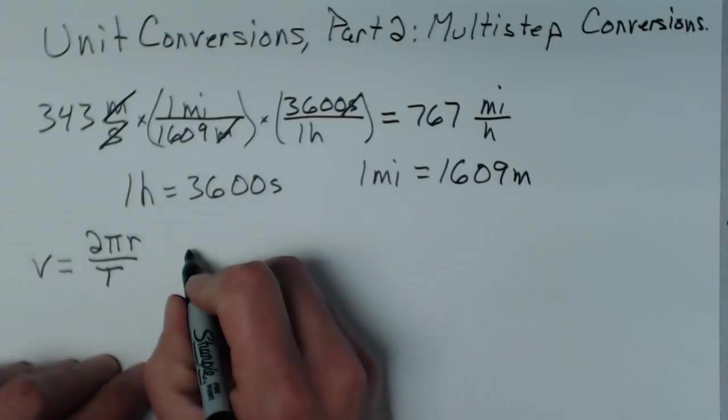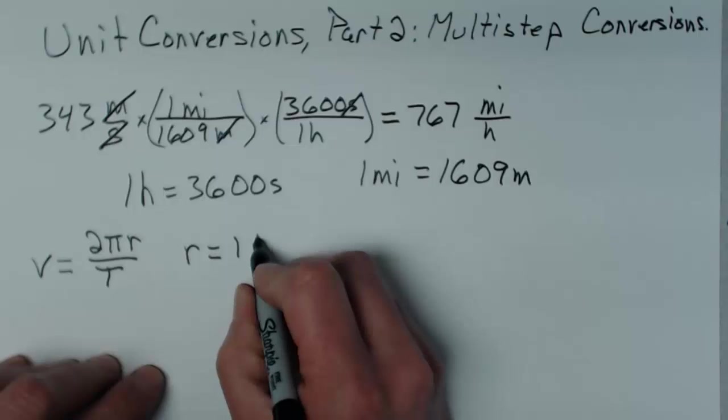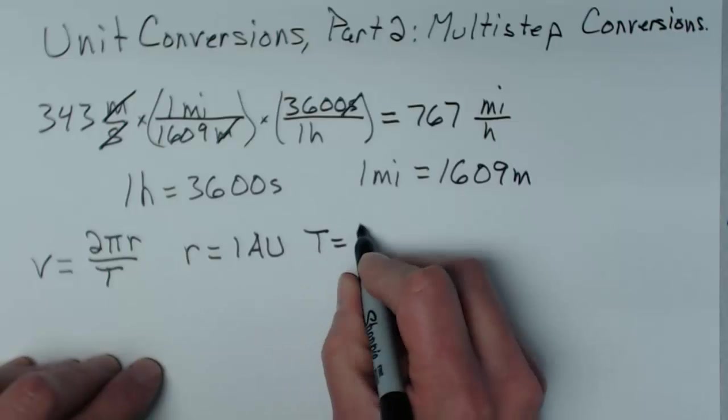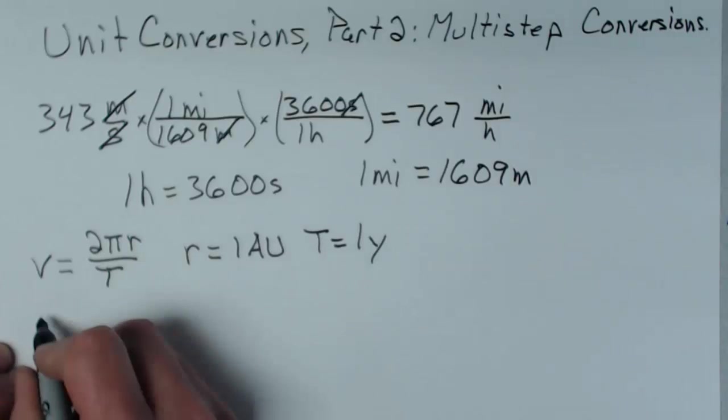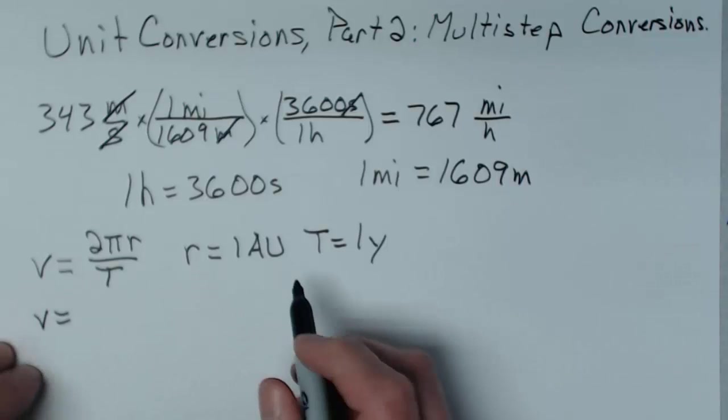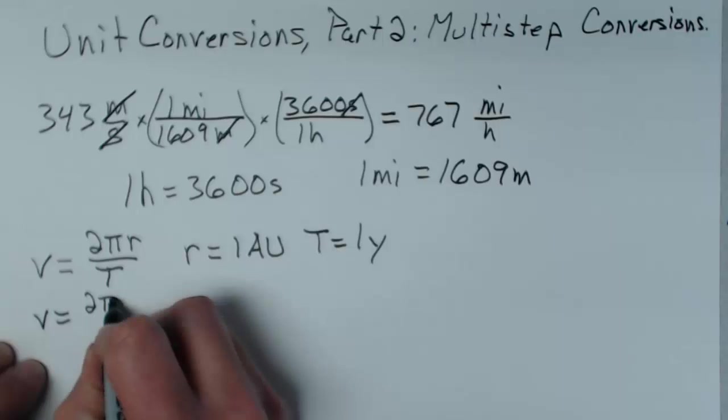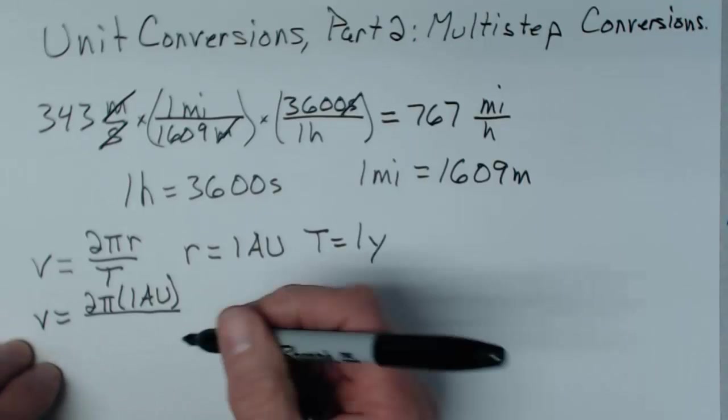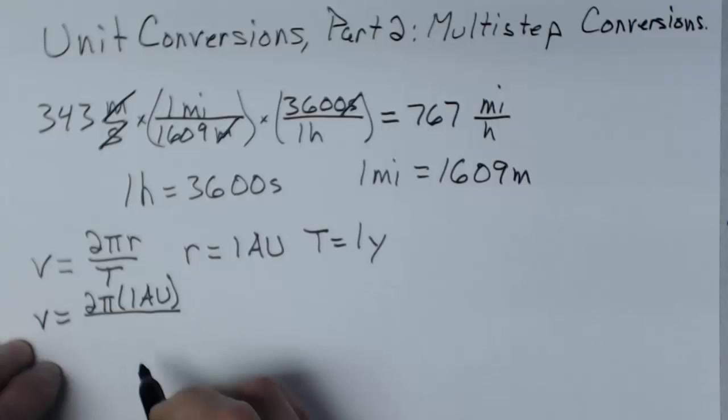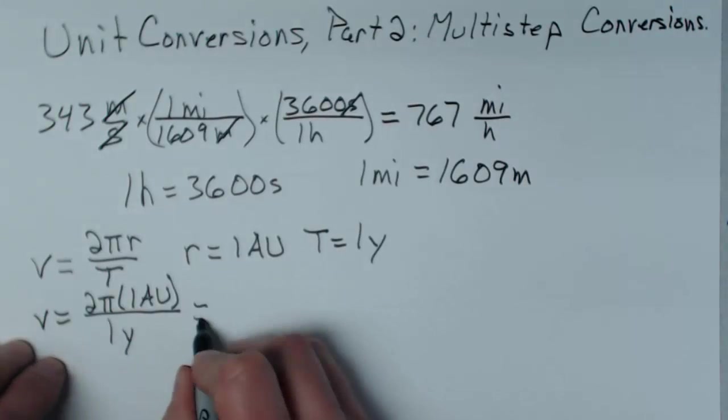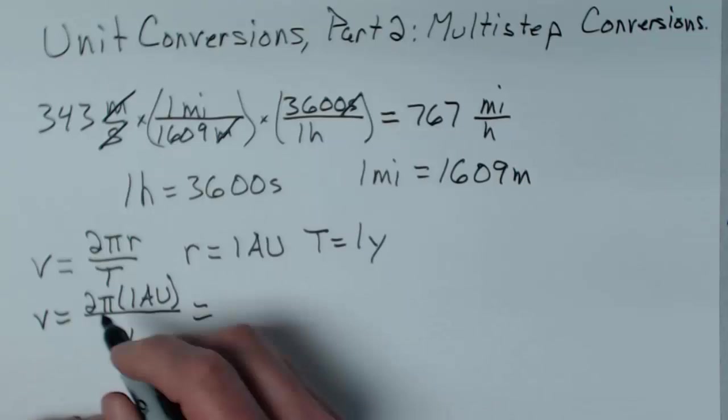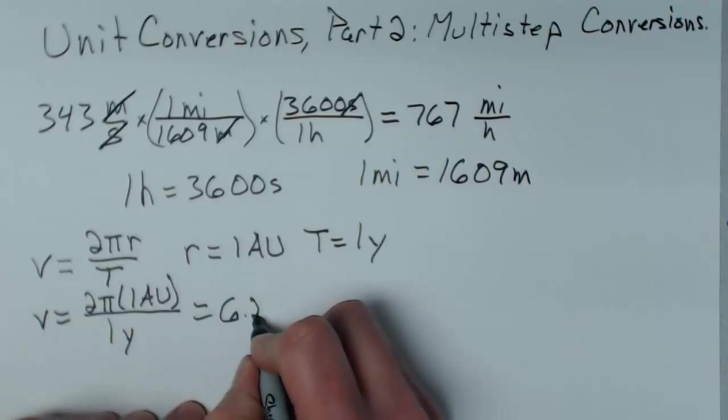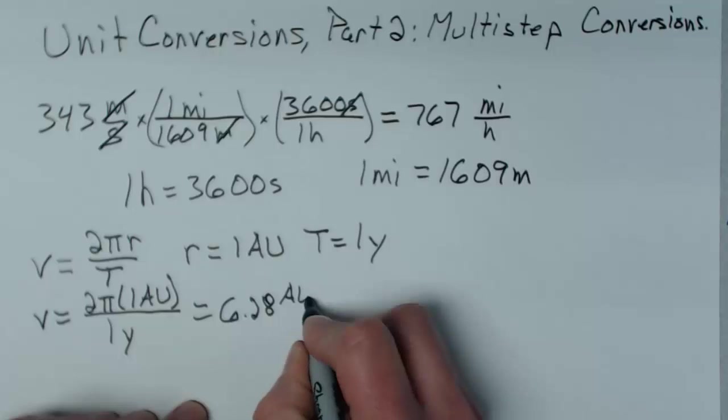Okay well, we know that the radius of the orbit happens to be one astronomical unit, and the time that it takes the earth to orbit happens to be one year. And so if we wanted it in particular units, I'd have 2 times pi times 1 AU. Maybe you've never even heard of that unit before. It happens to be the approximate radius of the earth's orbit divided by one year. And if I multiplied that out, 2 times pi is about 6.28 times 1, I'd get 6.28 AU per year.